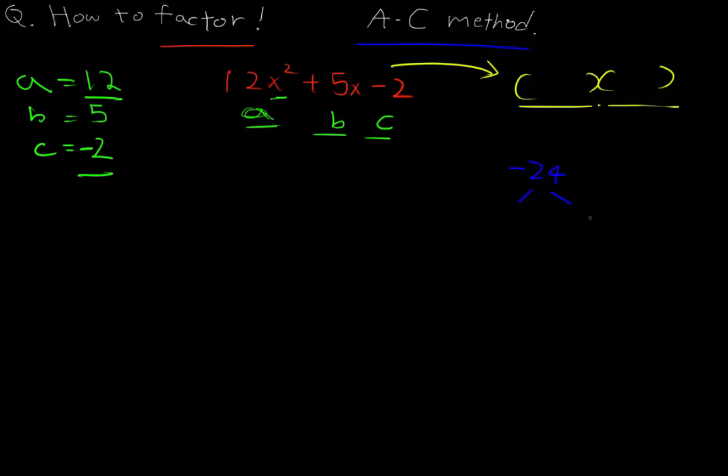But when you combine those two, you get +5. So there's two things we have to watch out for. Let's start with number one: 1 times 24, one of them has to be negative.